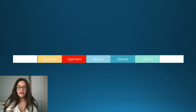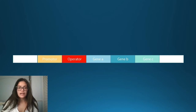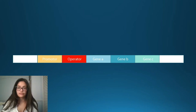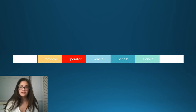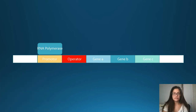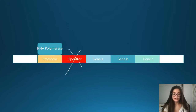Prokaryotes regulate their genes through transcription, and this occurs at a specific point in the DNA called the operon. We're going to be focusing on a few different segments within this: the promoter, the operator, and the structural genes, which code for proteins that are later used for cellular processes. In order for those structural genes to be coded into proteins, we need RNA polymerase to bind to the promoter and then transcribe all the way down the DNA strand. However, the operator can block RNA polymerase from doing so based on whether or not a regulatory protein has bonded to the operator.